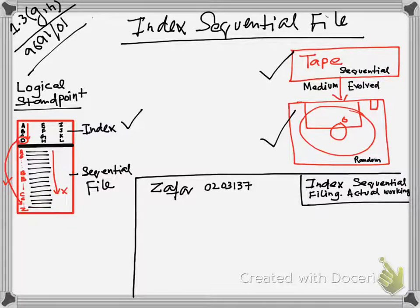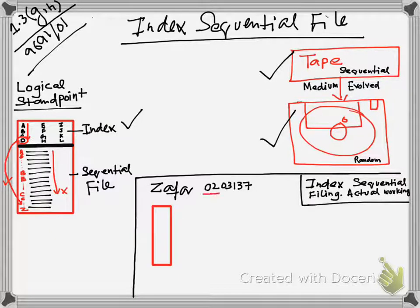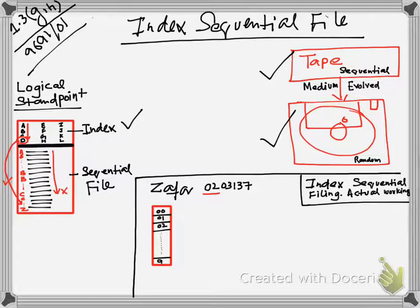Now let's look at what basically happens. We create indexes. The first index would represent the first two digits, so this index would have entries: 00, 01, 02, and so on, going all the way until 99.